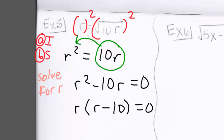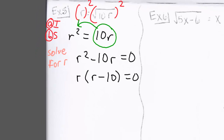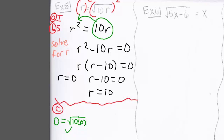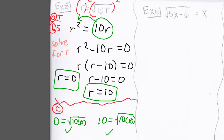Now we factor out the greatest common factor, r, leaving us r times r minus 10 equals 0. Setting each factor equal to 0 and solving for r gives us r equals 0 and r equals 10. Plugging 0 back into the original equation, 0 equals 0 checks, so 0 is an answer. Plugging 10 back in also checks: 10 equals the square root of 100. Therefore r equals 0 and r equals 10 are both answers.